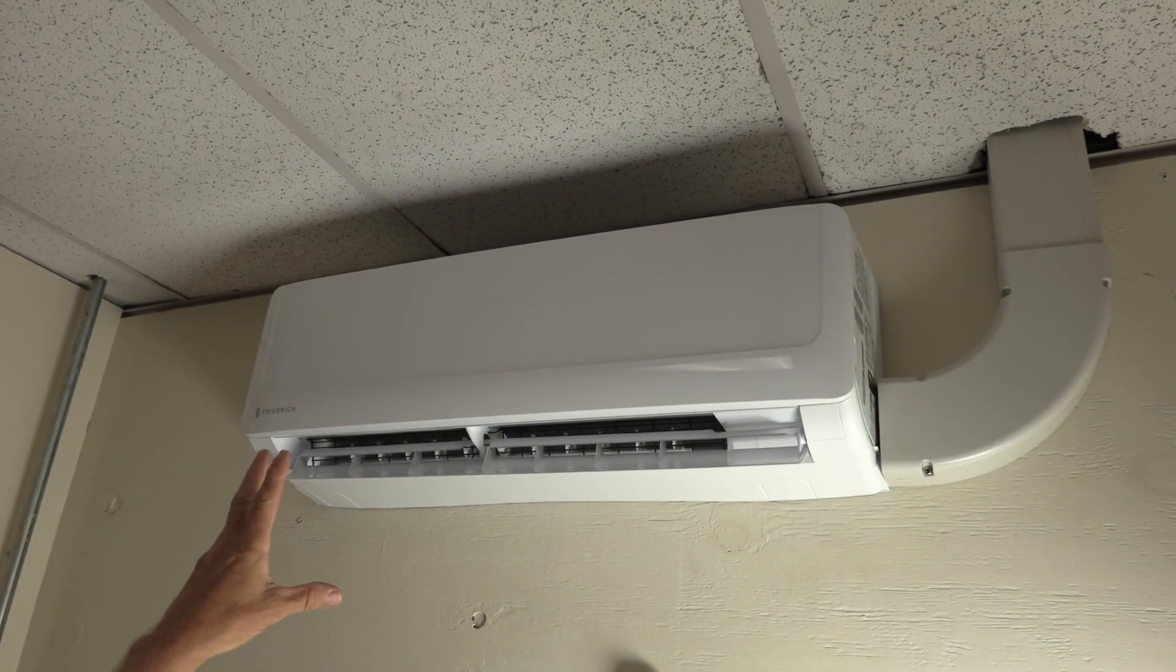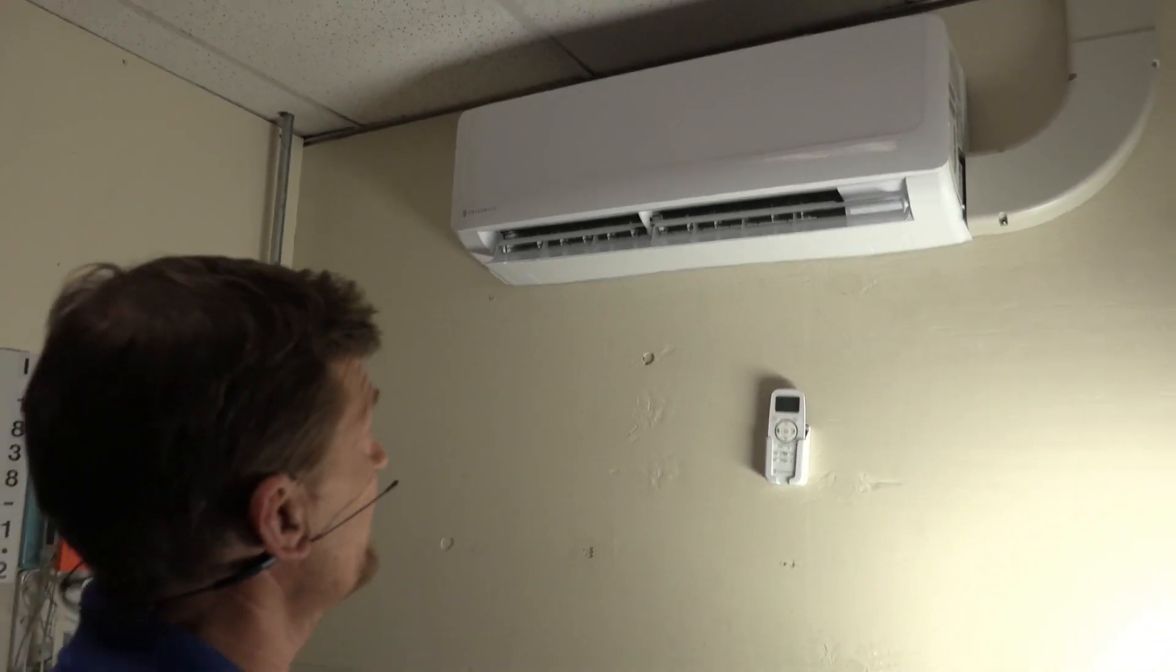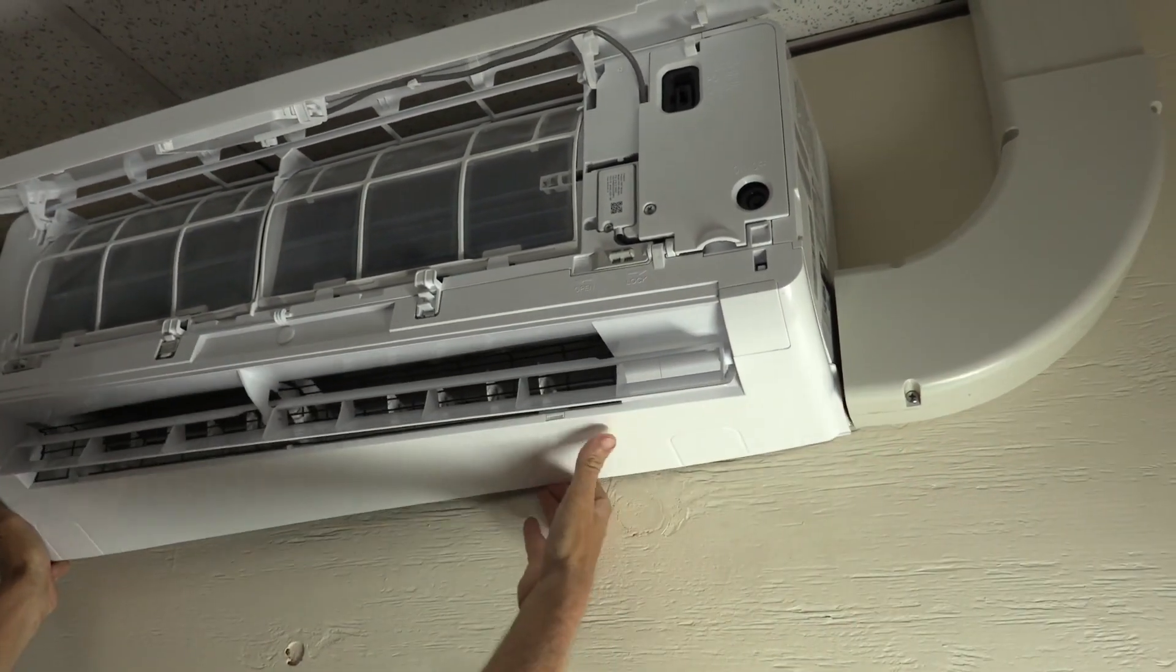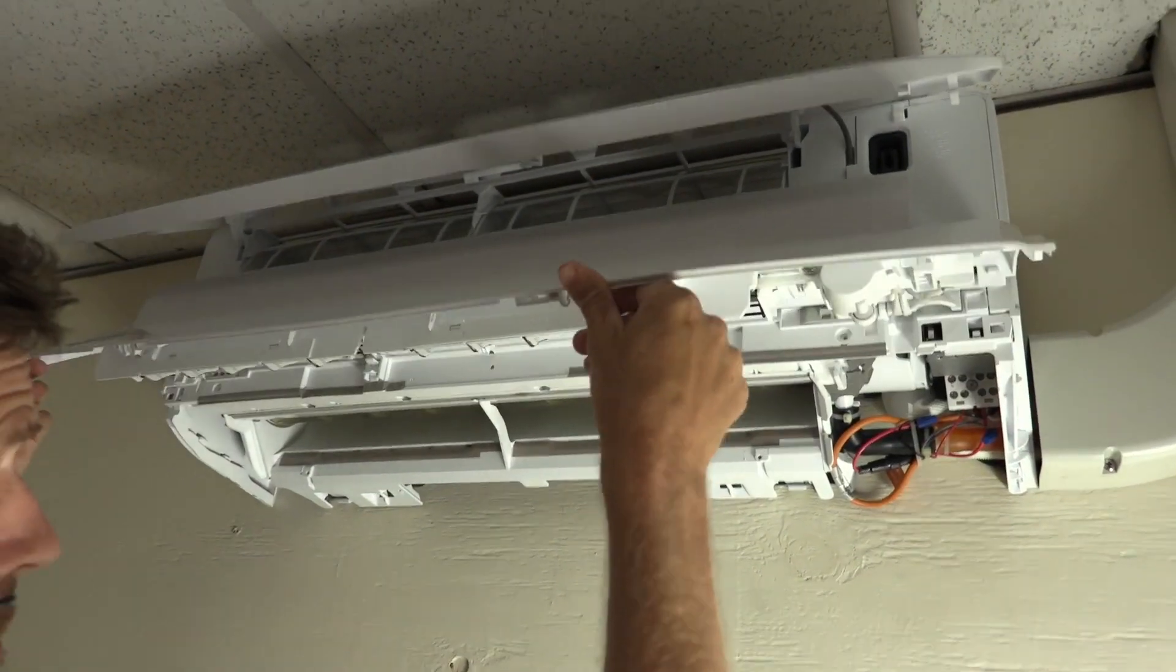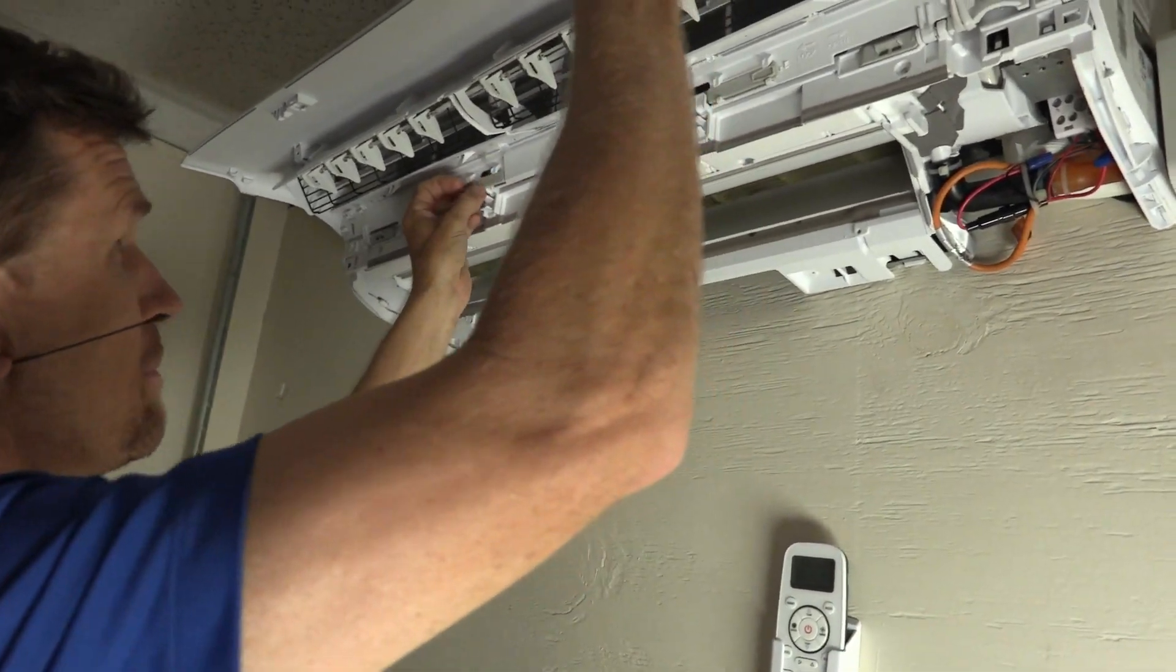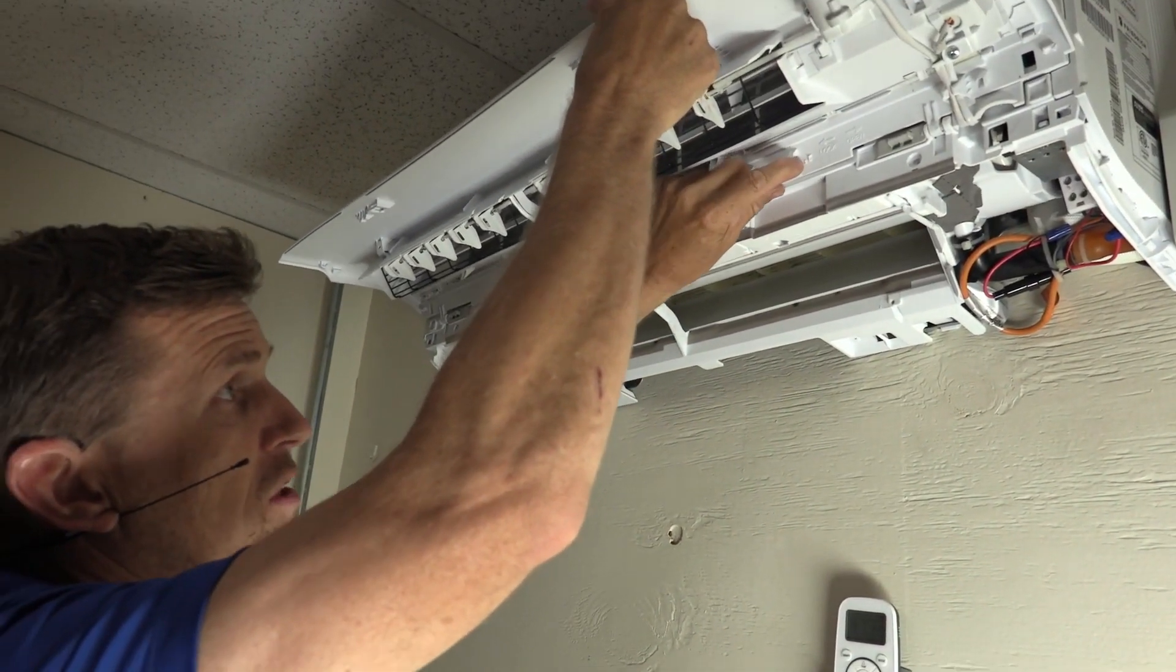This is the ductless mini split we're going to be installing the mini LED into. All you do is once you take two screws out, you just flip it up and lock it in place so you can actually have access to the blower.